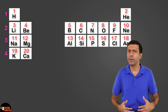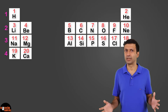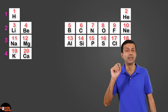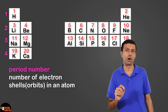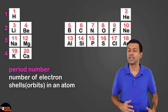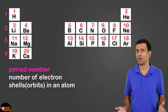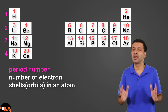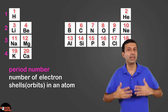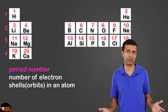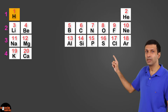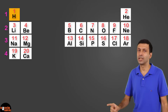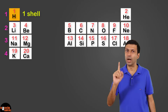So what does this period number tell us? It tells us the number of electron shells or electron orbits present in an atom. So we can predict the number of shells without even drawing the electronic structure. For example, hydrogen is in period 1, so it has only one shell.